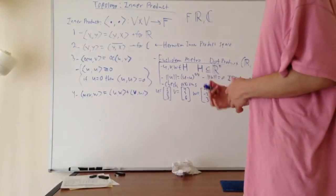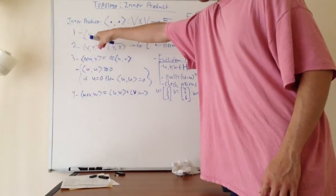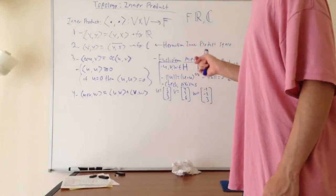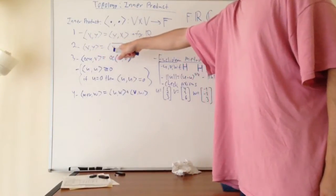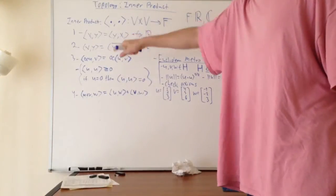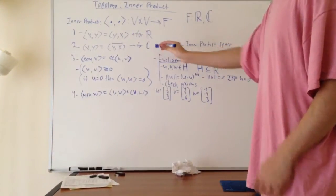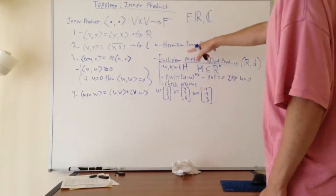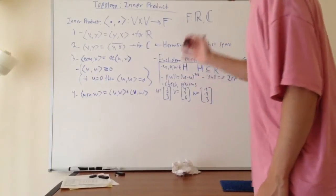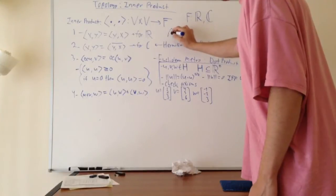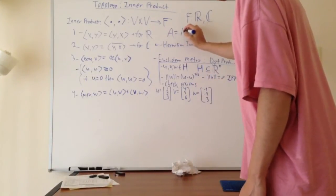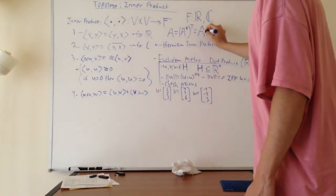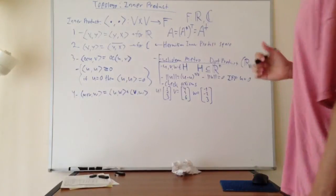The inner product also has some important axioms. The first one is that the inner product of X and Y is exactly the same as the inner product of Y and X — this is true for the real numbers. For the complex numbers C, the inner product of X and Y equals the inner product of Y and X but with its conjugate. When this property holds for complex spaces, we call that a Hermitian inner product space. A Hermitian matrix is a matrix equal to its own conjugate transpose — if A equals its conjugate transposed, we call it Hermitian, typically written with A dagger or A-plus.